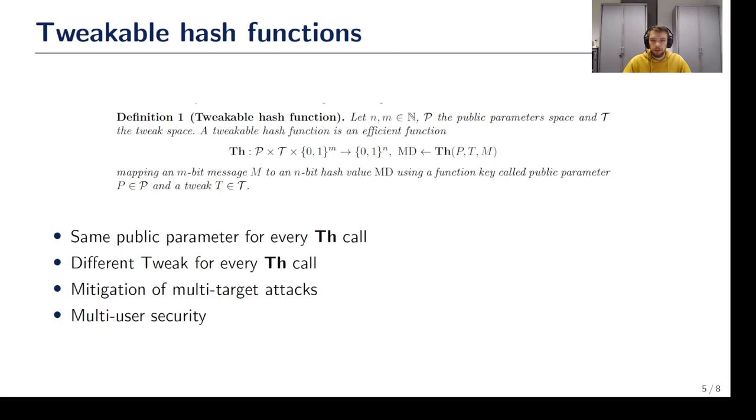The public parameter is a bit string that is a part of Sphinx+ public key. This input is the same for every tweakable hash function call in the scheme and helps to obtain multi-user security.